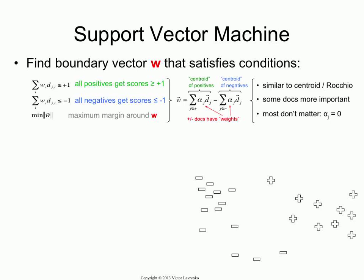Whenever I saw that formulation, it was always confusing to me — why are you minimizing the size of the weight vector? How is that related to the size of the margin? And why does the final solution have this centroid-like form? You can plow through it the formal way, and lecture slides for intro to machine learning will have a long derivation. But what I want to do is give just a little bit of intuition for why these things arise.